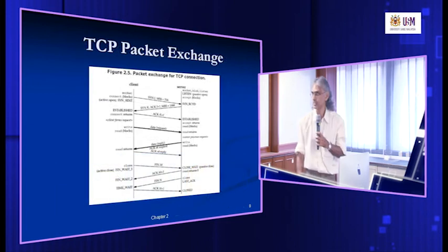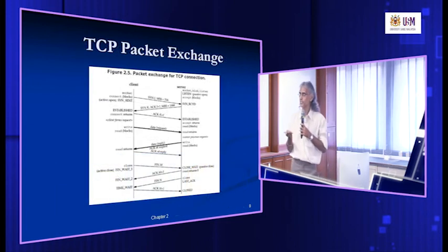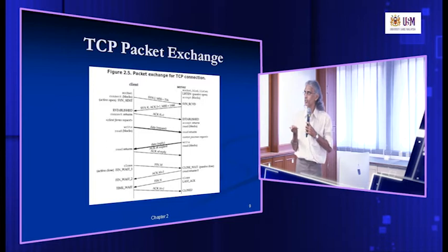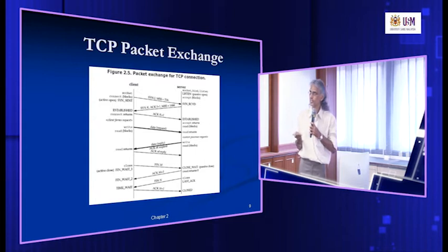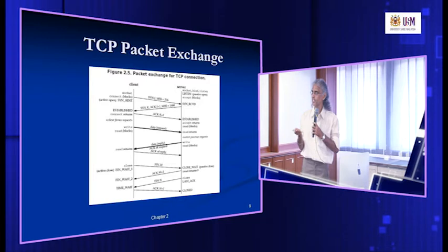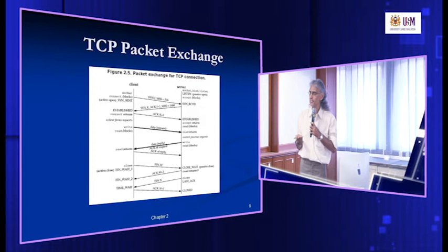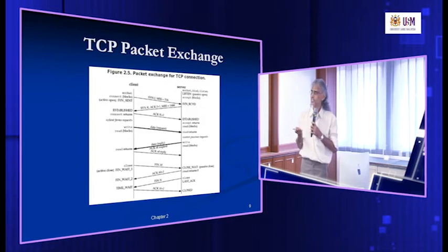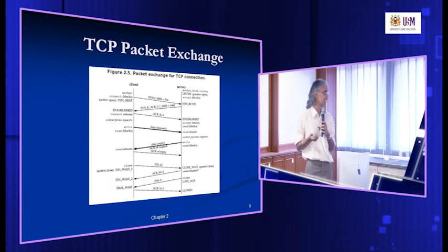This diagram gives you a summary of what's going on. Once the three-way handshake is completed, the connection is established and the client and server can start sending data between one another — writing to and reading from the socket. At the end, they close the connection one by one. So there are basically three phases: the handshaking, the data transfer, and the close.